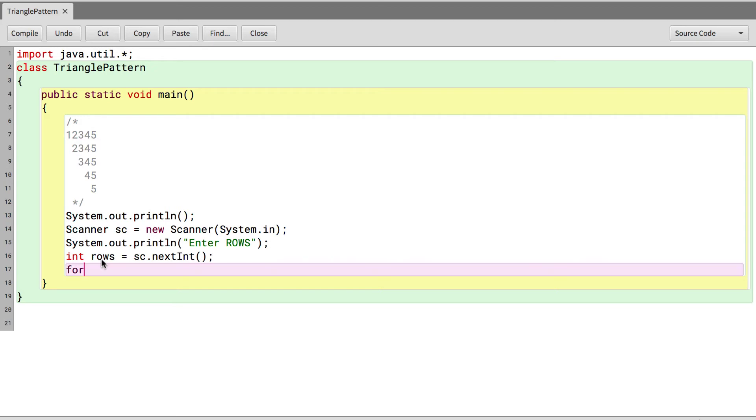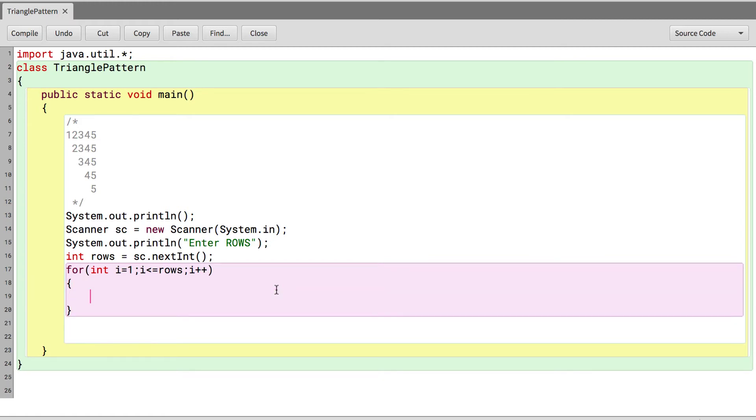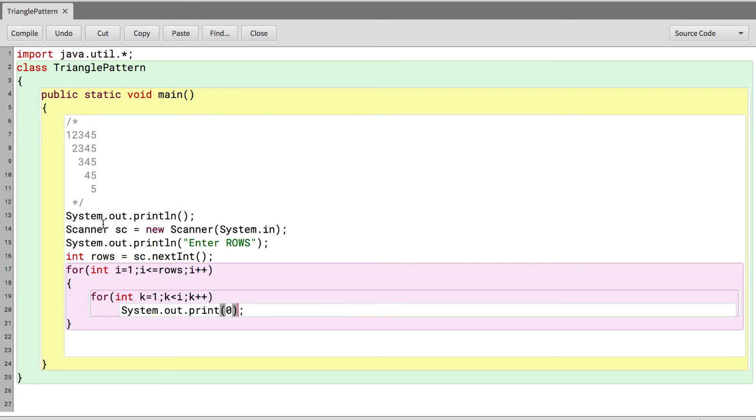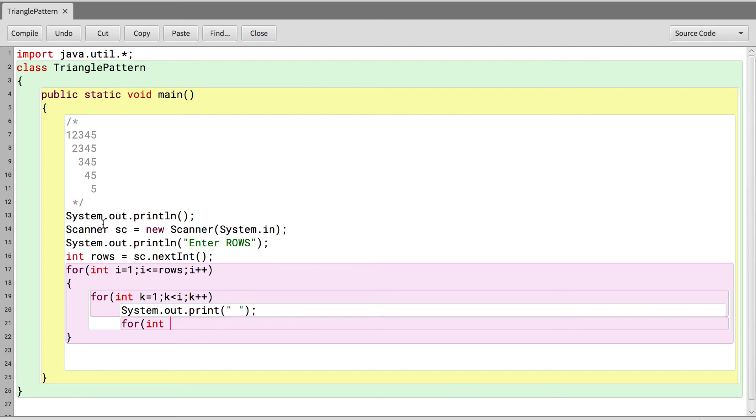Again, we have the outer loop which starts: i equals 1, i less than equal to rows—so let's take the input for the rows from the user. And then remember, first we have to control the spaces. So I'll say for int k equals 1, k less than i, and k plus plus. We just have to print the empty space.